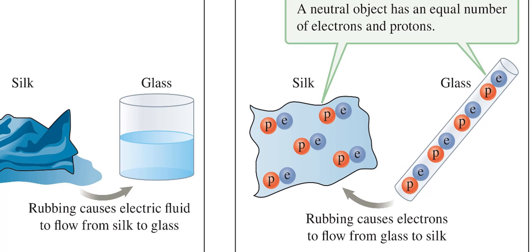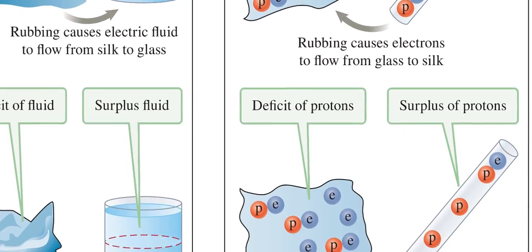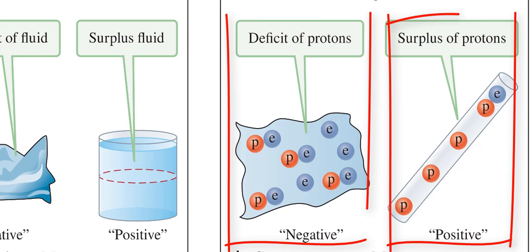The protons and neutrons are tightly bound in the nucleus and so they cannot be transferred. Therefore, when glass is rubbed against silk, electrons are transferred from the glass to the silk. Afterward, the glass has a surplus of protons and silk has a deficit of protons.